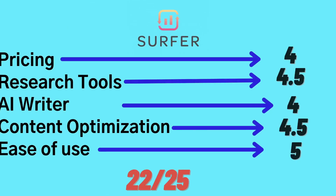For my overall score, I'd give Surfer SEO a score of 22 out of 25. They're a little bit pricier, but they have a lot of really good features and tools included such as topic discovery and the keyword research tool. They have a pretty decent AI writer included within their software, and they've made it very beginner-friendly and very easy to use. So for those reasons, I'd give Surfer SEO a score of 22 out of 25.